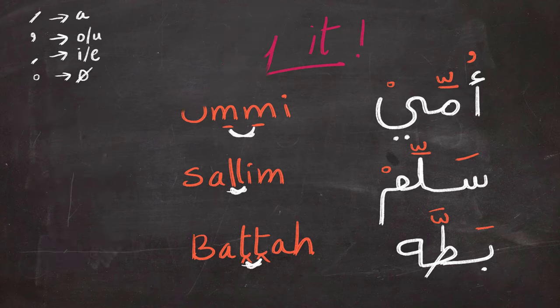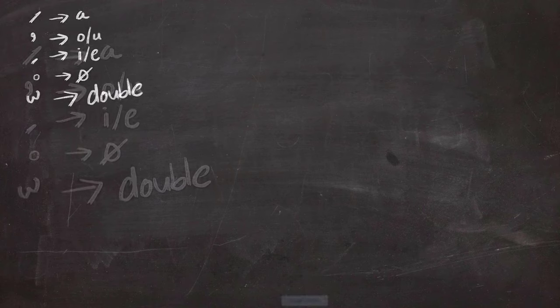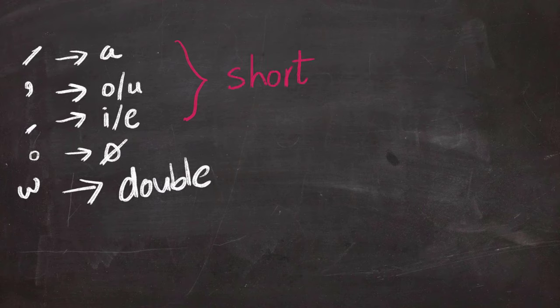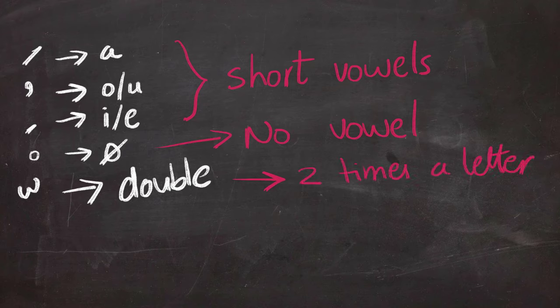Ummi means mom, salim means greet, and batta means duck. So today we learned the symbol of shedda, which means doubling the letter. Again, the first three symbols are the short vowels, the perfect circle is no vowel, the symbol that looks like W is two times a letter.